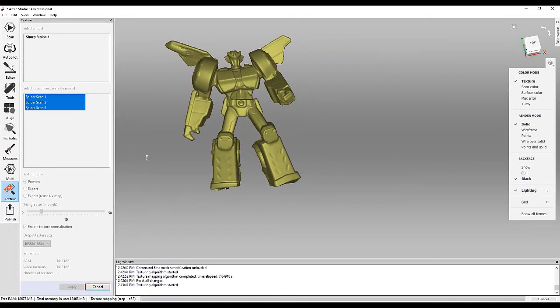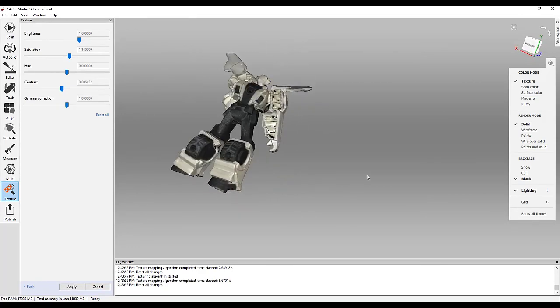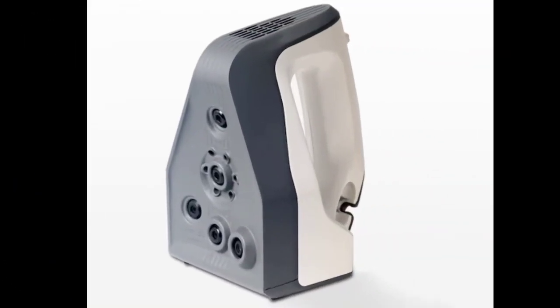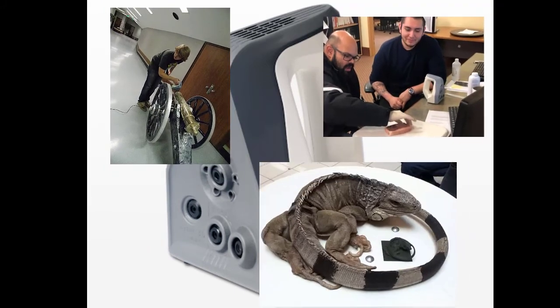When the scan is complete, you will see the processed scan in the Artec Studio program. After some editing within the program, the object is ready to create a solid mesh of the 3D model. With the Spider, our Makerspace has scanned objects such as the Fremont Cannon, steaks, and even an iguana.